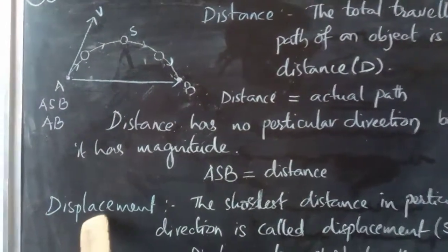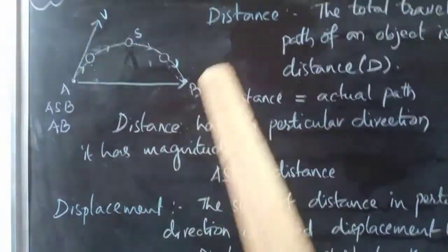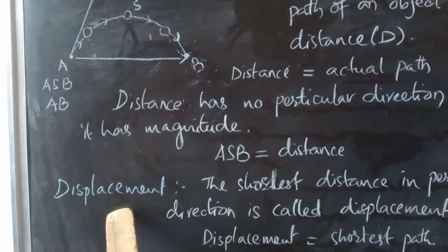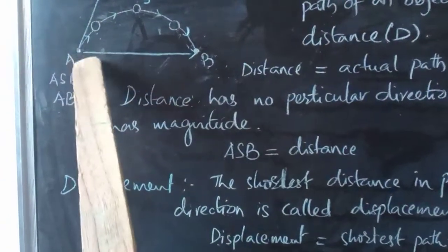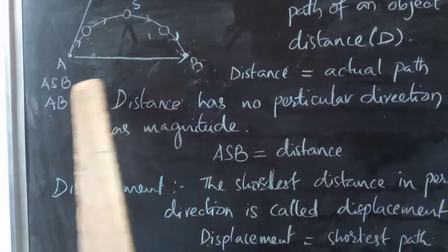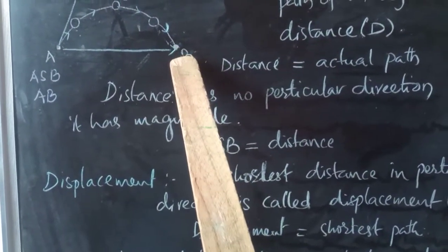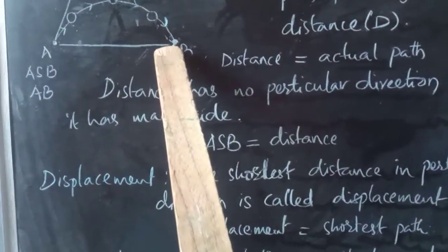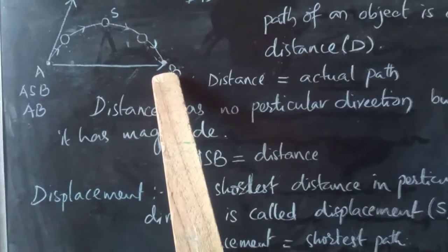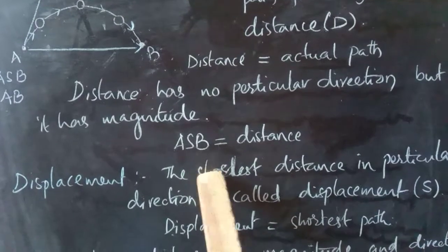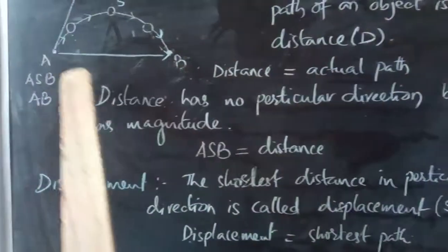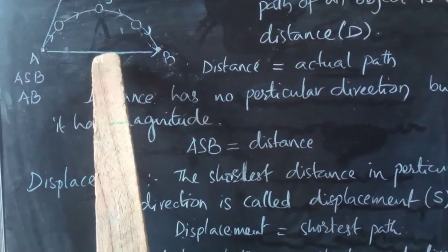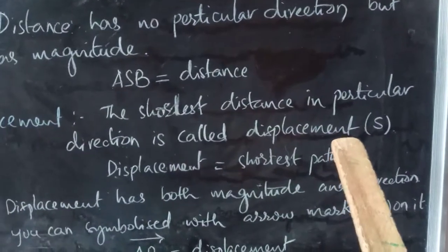Now let's discuss displacement. What is the difference between distance and displacement? Displacement means not the actual path but the actual destination. The actual destination covered with the shortest distance — that is called displacement. So the shortest distance in a particular direction is called displacement. We symbolize displacement as S.